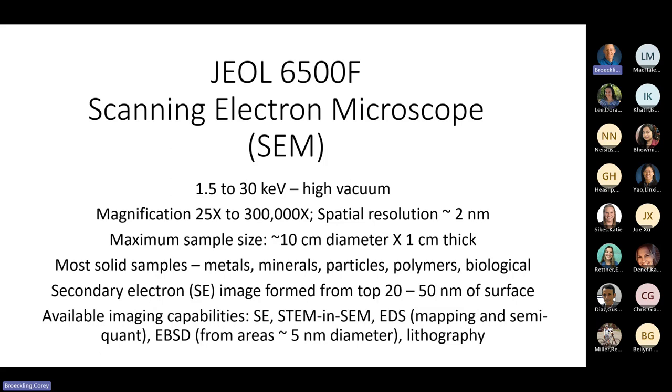The sample has to be solid - metals, minerals, particles, polymers, biological. For the most part, the SEM that we have now, we just do secondary electron imaging. That image is the top 20 to 50 nanometers of the surface. We can do STEM-in-SEM, EDS which is elemental imaging and mapping, EBSD which is electron backscattered diffraction, and lithography.